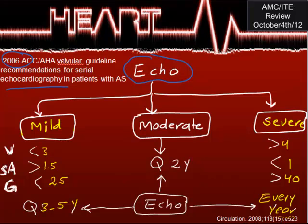Anything in between falls under moderate. You have to memorize these numbers — if you see a really high gradient, this indicates severe aortic stenosis, and you do another echo for this patient after one year. That's the key takeaway for echo surveillance intervals.